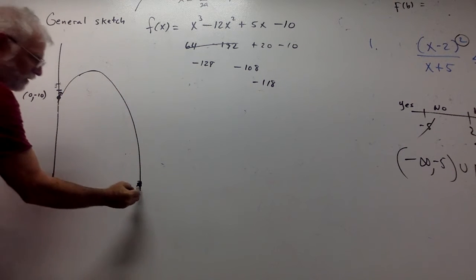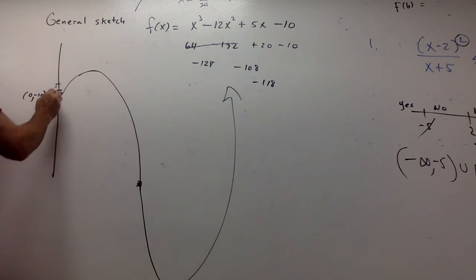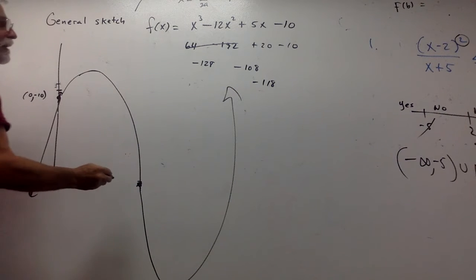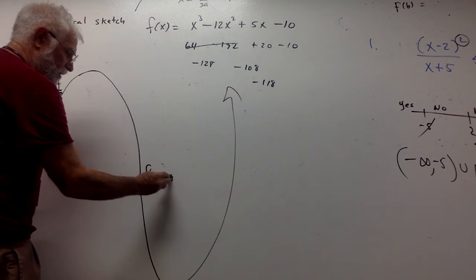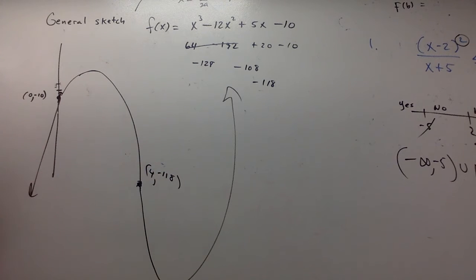That's concave down, then concave up. And that's our graph. And this is 4 comma negative 118. All right. Can you see that? Yeah, pretty much. All right.